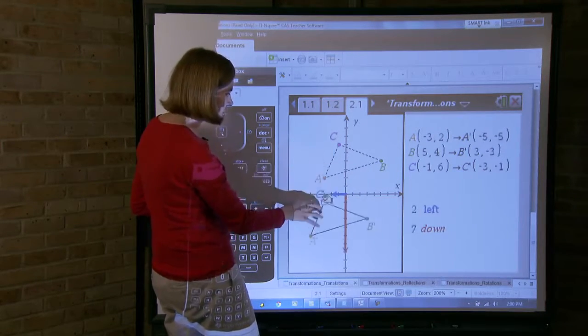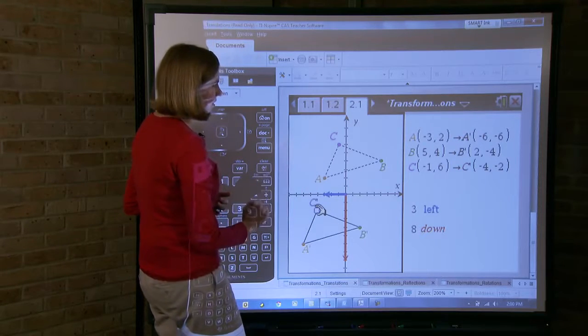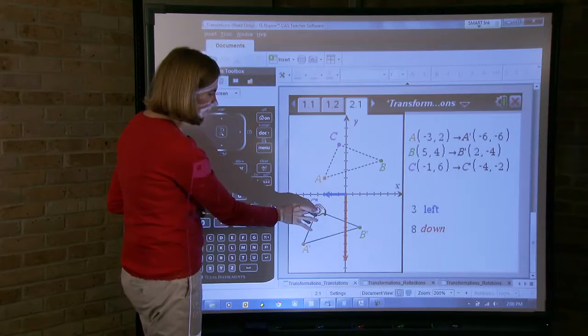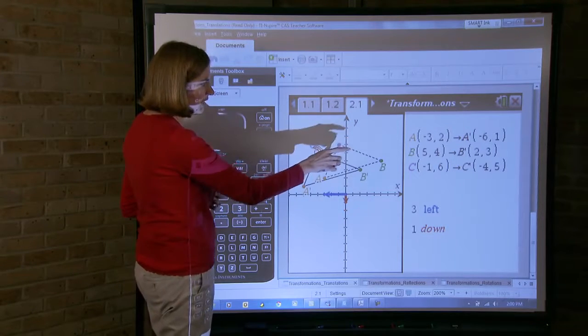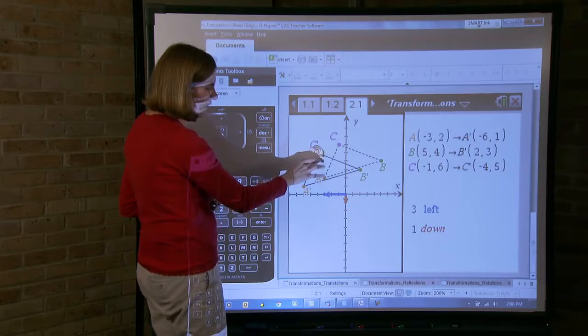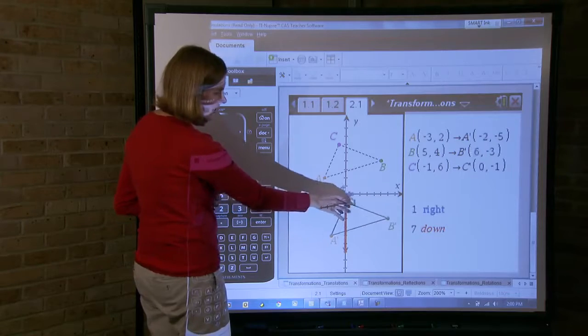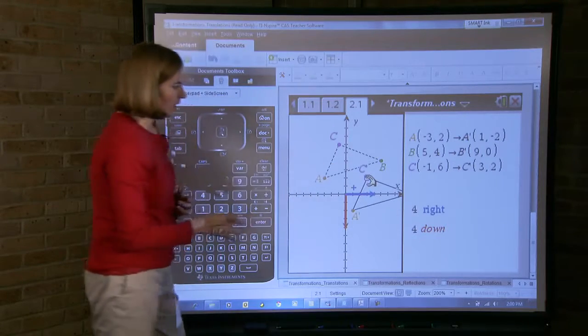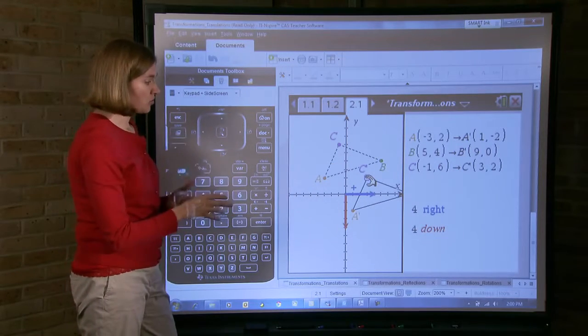On this page, students can examine what happens to the XY coordinates of points of the image and the pre-image as they move the triangle around in the coordinate plane.